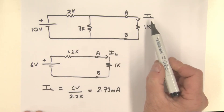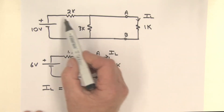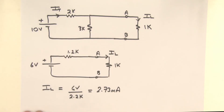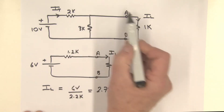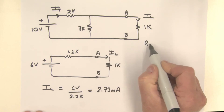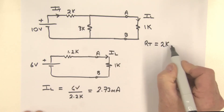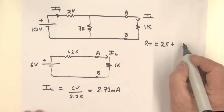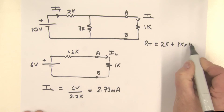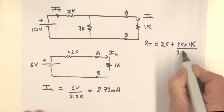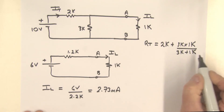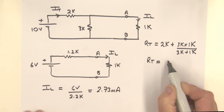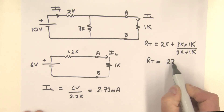In the original circuit, it's a little more complex. One way is to first find the total current being pulled from the voltage source, which means finding the total resistance RT. RT equals 2K plus the parallel combination of 3K and 1K, which is 3K multiplied by 1K divided by 3K plus 1K. Working that out, the total resistance is 2750 ohms.